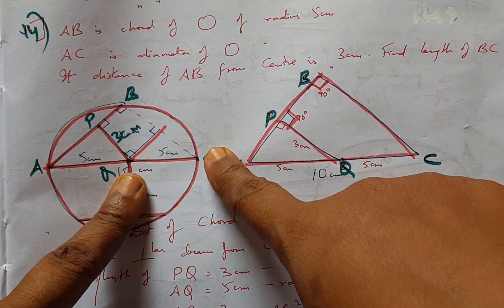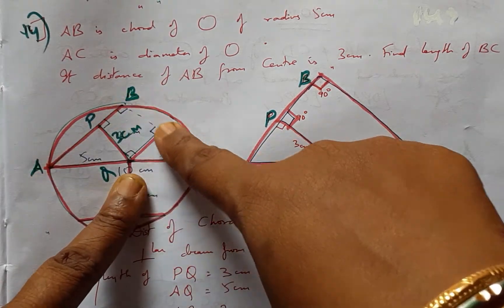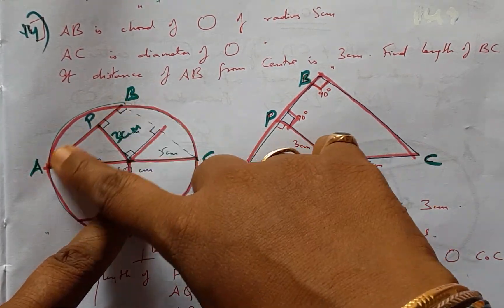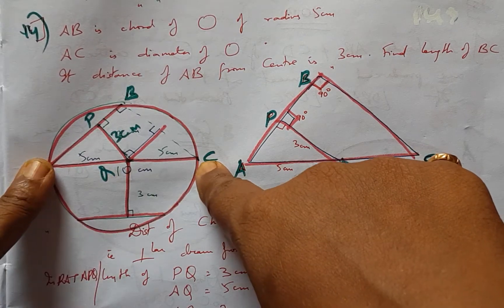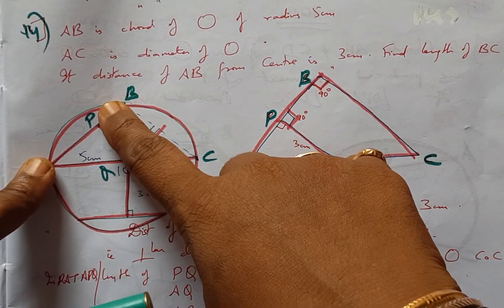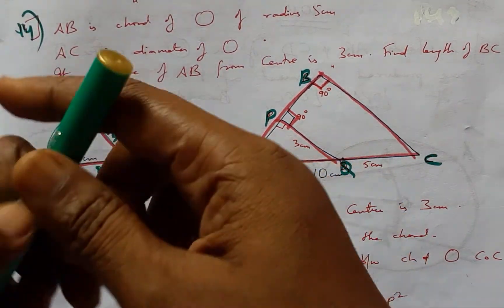AC being the diameter, the chords make an angle of 90 degrees on the circle when the two ends of the diameter meet at a point. That is one clue.